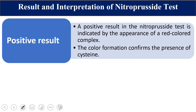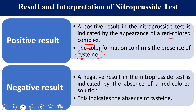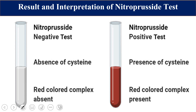Two types of results are possible — positive or negative. A positive result is the appearance of a red or violet-colored complex, indicating the presence of cysteine. A negative result occurs when, after addition of sodium nitroprusside and sodium hydroxide or ammonium hydroxide, no color appears — the absence of a red or violet complex indicates the absence of cysteine, and you will have a colorless solution.